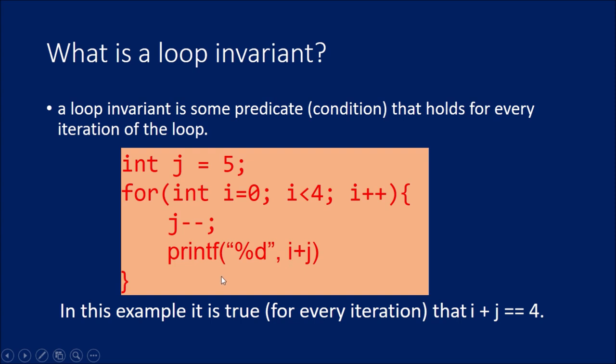Now, what is happening here, every time it will print the value of i plus j equal to 4. So, for each iteration or every iteration of this loop, it is true that i plus j equal to 4. It is not varying with the loop. i plus j, the value is not varying with the loop. This is one example of loop invariant.